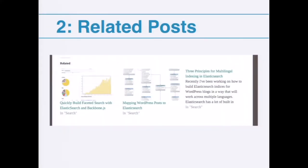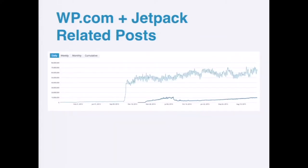The second use case is related posts. I spent a good chunk of a year working on Jetpack and WordPress.com related posts. It's a very major feature for any modern website — pretty much every website expects that when you get someone on your site, you want to keep them there. Related posts is a great way to do that. We see tons of queries — the top line is the number of queries for WordPress.com and the bottom is for Jetpack related posts — and we're in the 70, 80, 90 million range per day.